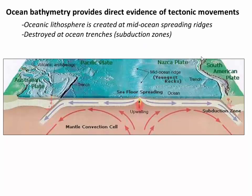There's a lot of evidence that plates are destroyed and created by tectonics. One piece of direct evidence we've known for a long time is from ocean bathymetry — literally the elevation of the seafloor. We know that oceanic lithosphere is created at what are called mid-ocean spreading ridges, which are literally 10,000-foot-high mountain chains that run down the center of our ocean basins. And we know that tectonic plates are destroyed at oceanic trenches — deep, 10,000-foot-deep trenches like the Mariana Trench — where these plates are diving down back into the mantle. So literally the shape of Earth's surface, some of our most important physiographic features, are direct evidence for plate tectonics.